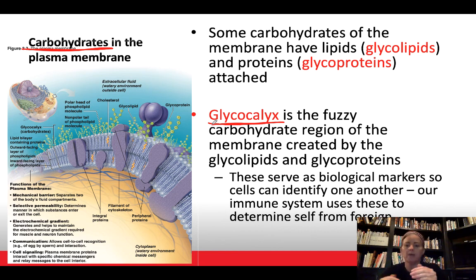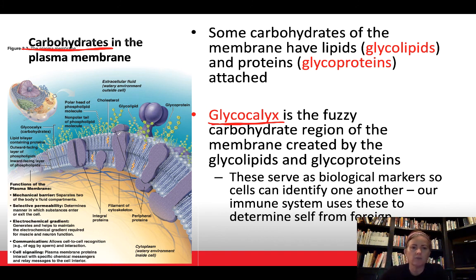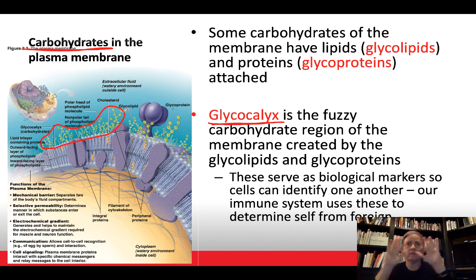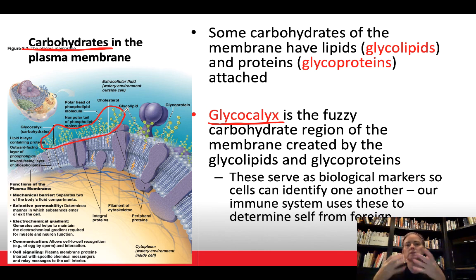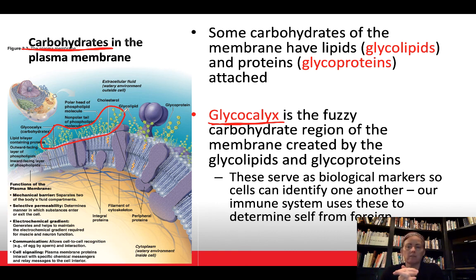The glycocalyx is like rolling a cookie in sugar — these carbohydrate groups stick up from the exterior of the plasma membrane, visible in diagrams as fuzzy groups surrounding the cell. They serve as biological markers on the cell so we can determine self from non-self; our immune system uses the glycocalyx in that way.